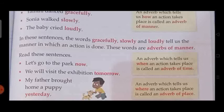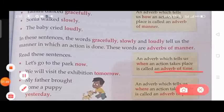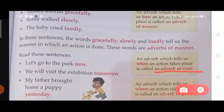The second type is adverbs of time. An adverb of time tells us when something happens. While seemingly similar to adverbs of frequency, adverbs of time are usually placed at the end of a sentence. For example: now, tomorrow, yesterday.